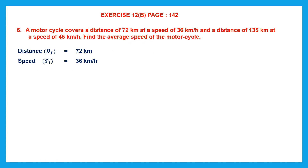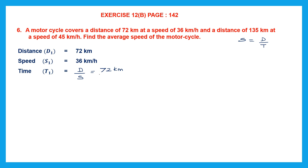Now if we have to find speed, what is the formula? Speed is distance divided by time. So to find speed we need distance and time. Now what values do we have here? We have speed and distance, but we don't have time. That means first we need to find the time. So time 1 — the formula to find time is distance by speed. Distance here is 72 kilometers and speed is 36 kilometers per hour.